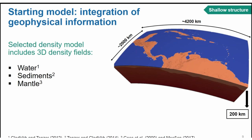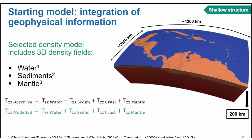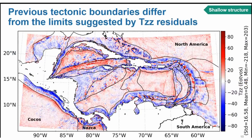In this starting model I'm assuming 3D density fields for water, sediments, and mantle, following different published approaches. The idea of having this more realistic resolution for these layers is that the observed gravity will be affected by the signal of water, sediments, crystalline crust, and mantle. If I have a detailed resolution for water, sediments, and mantle, I can assume that the residuals — observed minus modeled gravity — will contain information about the crystalline crust, which I initially assume at a constant density.